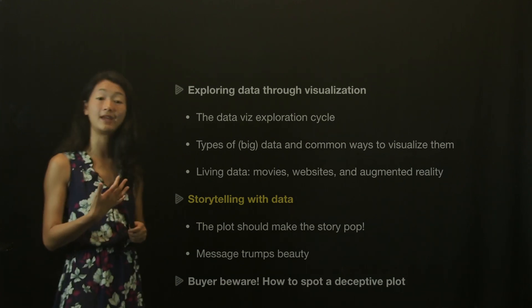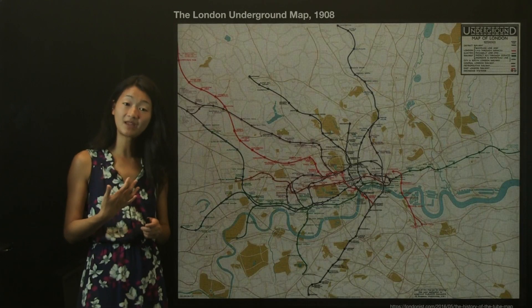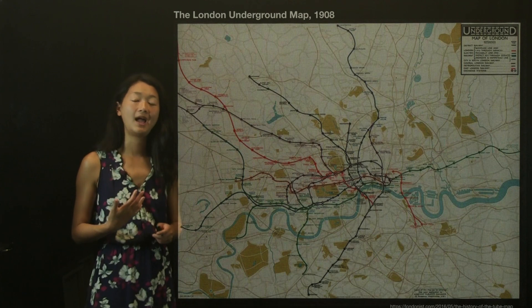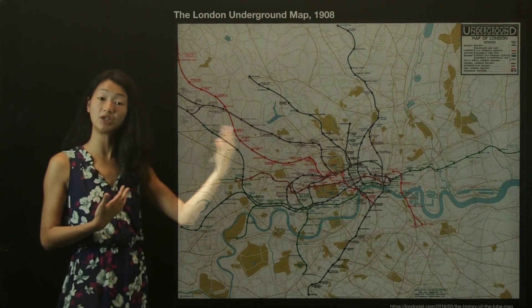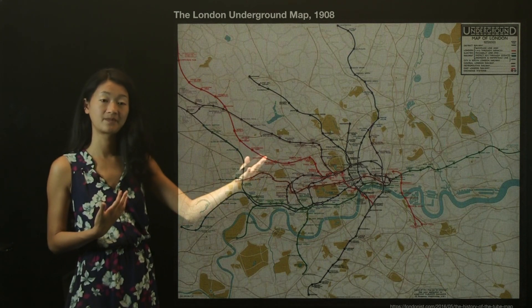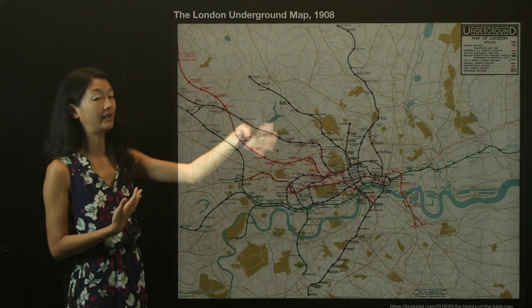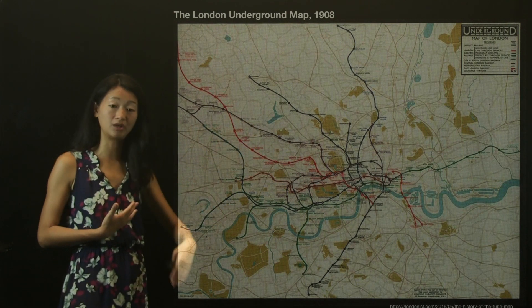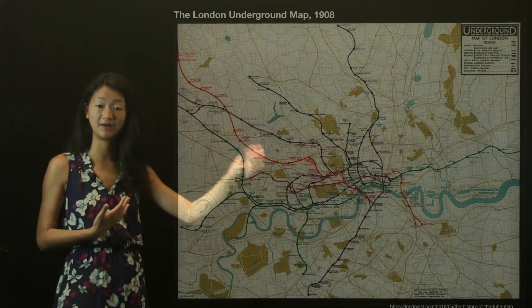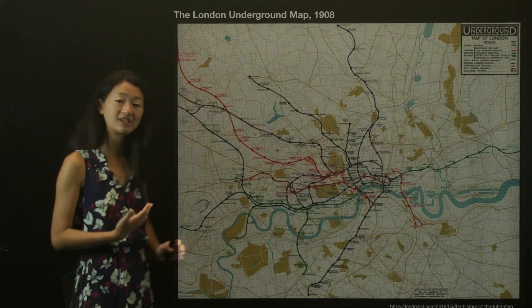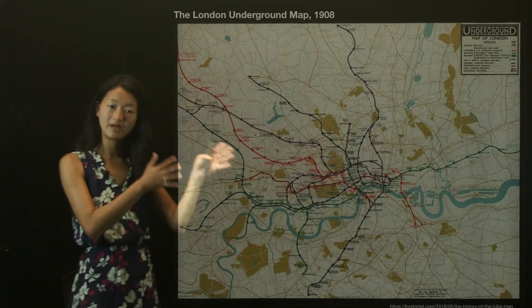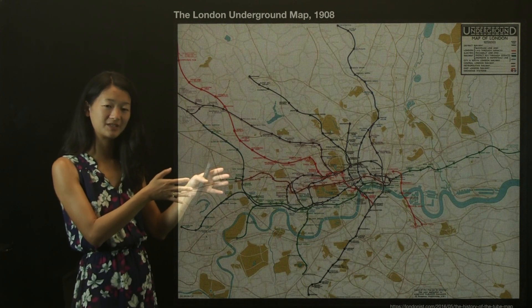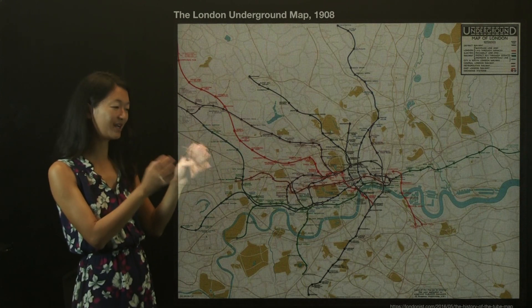I'm going to illustrate this with a map — a London Underground map from 1908. In this map, you see the locations of all of the underground stations, and it's overlaid on top of a topographical map that shows all of the surface roads, all the rivers, all the towns and stuff like that. Now, the reason that we don't make maps like this anymore is because this has a lot of deficits.